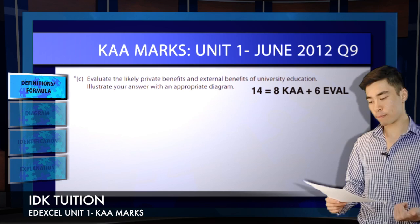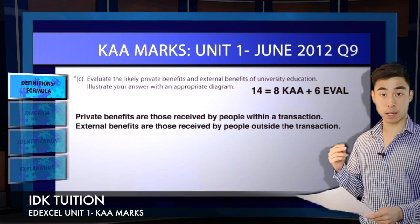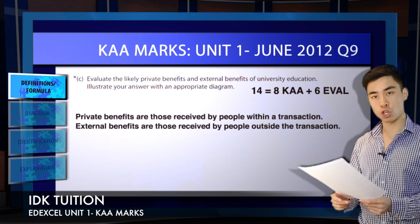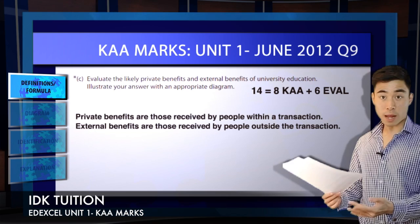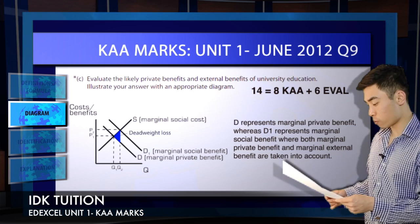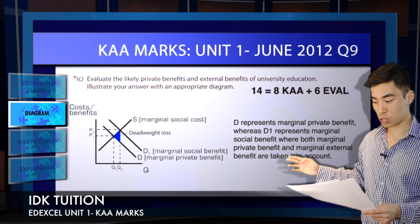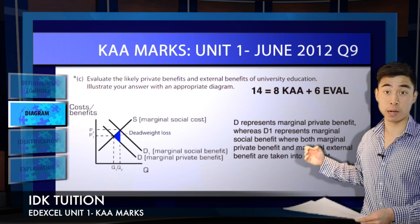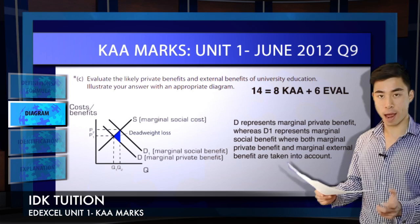Private benefits and external benefits — you need to define both of these. The mark scheme has two marks available for defining private benefits and two marks for defining external benefits. Then for the diagram, anytime the question prompts you to draw a diagram there are four marks on offer. We've already got four marks for our definitions and a further four marks for our diagram — just by including those go-to KAA points, we've picked up all eight KAA marks for this question.